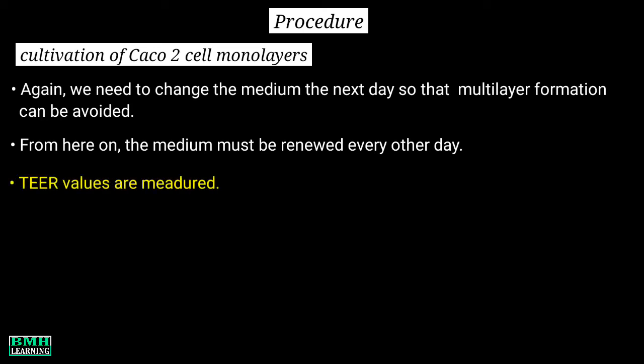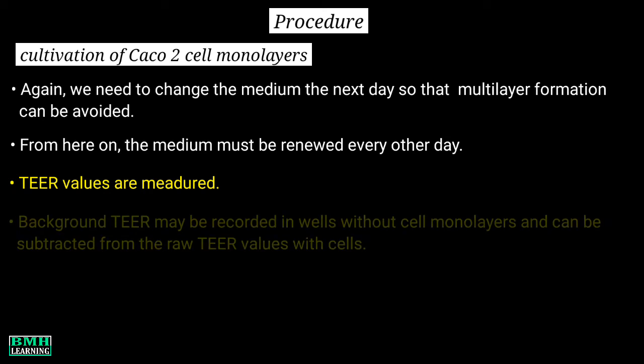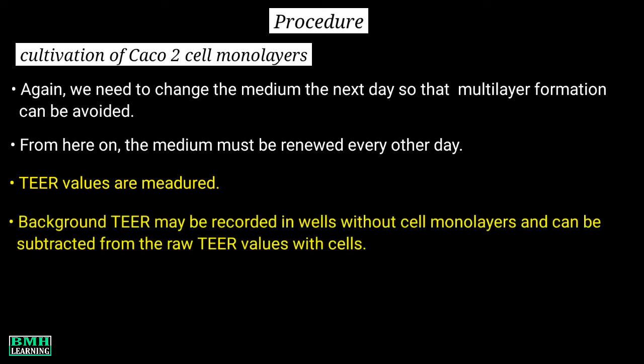TEER values are measured; background TEER may be recorded in wells without cell monolayers and can be subtracted from the raw TEER values where cells are present. Next is washing, where the cells are washed with HBSS at pH 7.4.